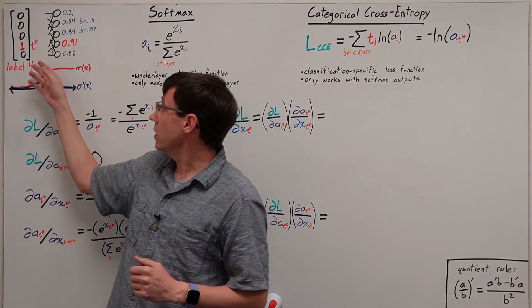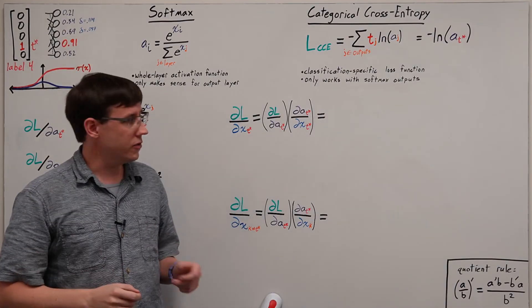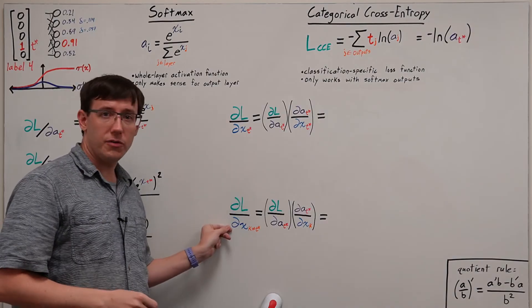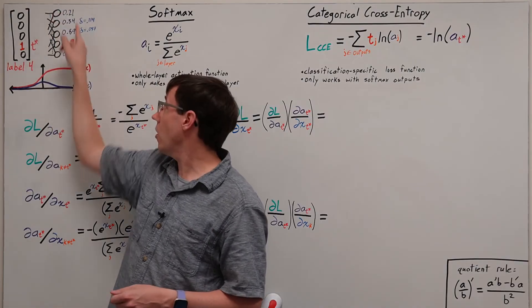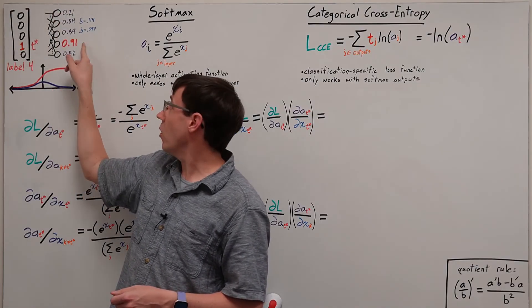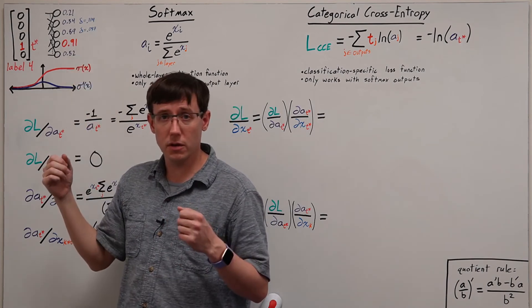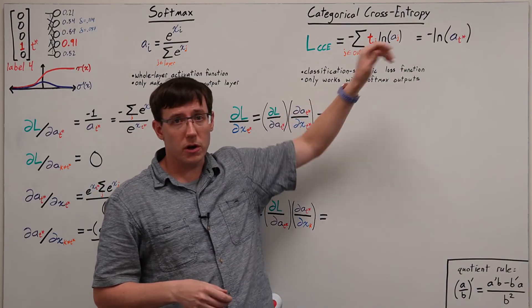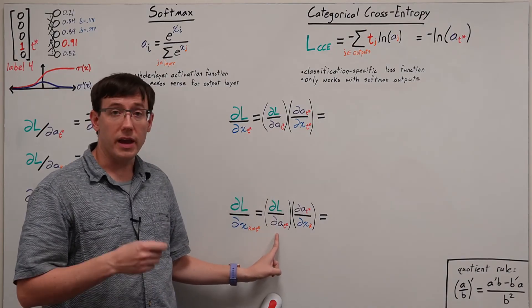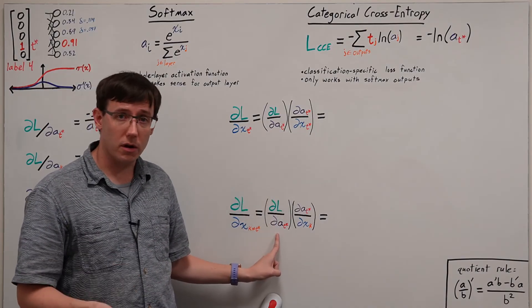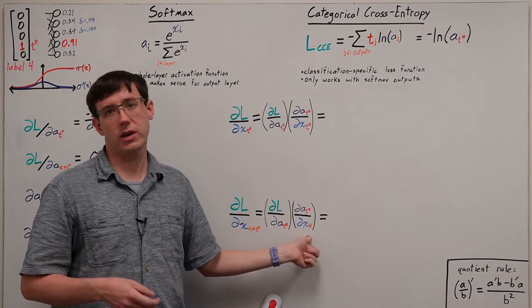Now to find the actual deltas for the output layer, we want the partial derivative of the loss with respect to each of the output layer's inputs. Each of those inputs affects all of the activations, but then only the activation for t star affects the loss. So when we apply the chain rule to the loss function, we end up with the partial derivative of the loss with respect to the activation of t star times the partial derivative of that activation with respect to each of the layer's inputs.